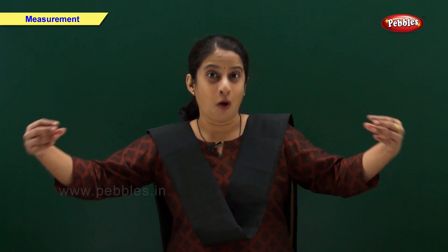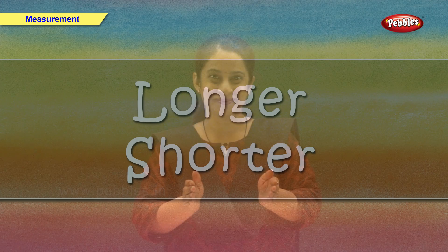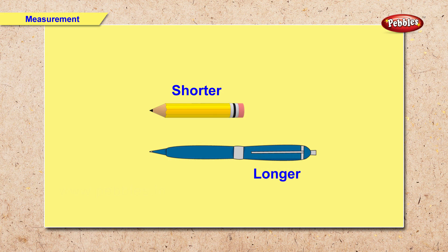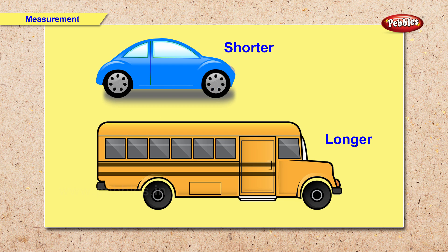Let us see longer and shorter. Here we have a pencil and a pen. So what is longer and what is shorter? The pencil is shorter and the pen is longer. Now we have a car and a bus. Which vehicle is longer and which vehicle is shorter? Bus is longer and a car is shorter.